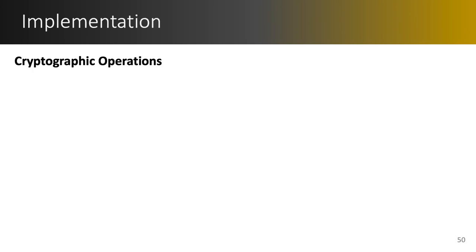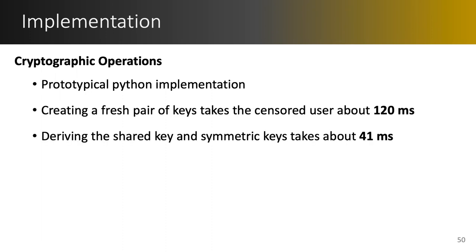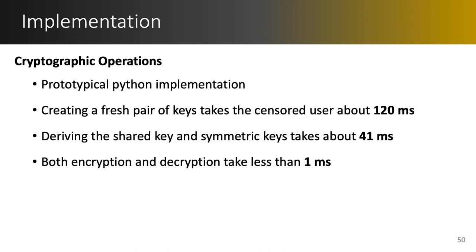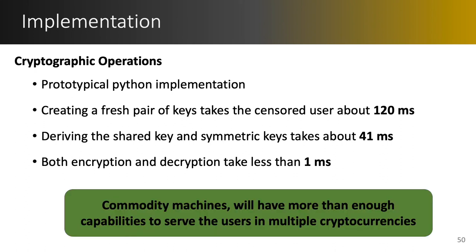Now we move on to the implementation of MoneyMorph. We divide the cryptographic operations from the transaction encodings. For the cryptographic operations, we prototyped our implementation in Python using a Core i7 16 GB RAM laptop and observed that creating a fresh pair of keys takes about 120 milliseconds on average. Furthermore, deriving the shared key and the three symmetric keys took about 41 milliseconds on average. Both the encryption and decryption of messages took less than one millisecond. In conclusion, even current commodity machines have more than enough processing capability to serve censored users across multiple cryptocurrencies simultaneously.